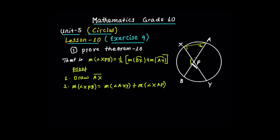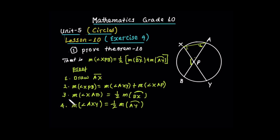The measure of angle XPB is equal to the sum of angle AXP and angle XAB. By the inscribed angle formula, the measure of angle XAB is half the measure of arc BX, since it is an inscribed angle subtending arc BX.